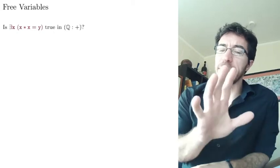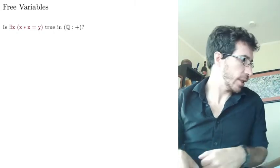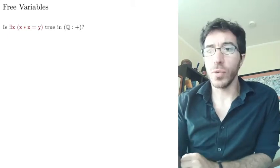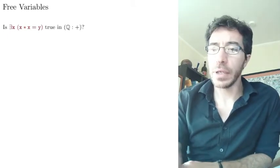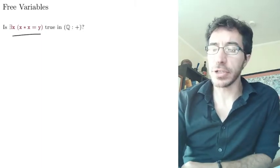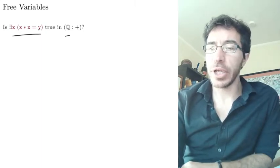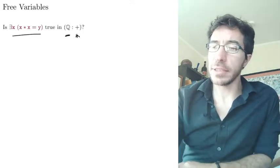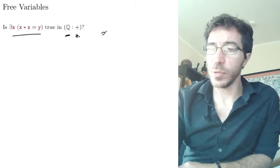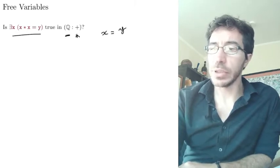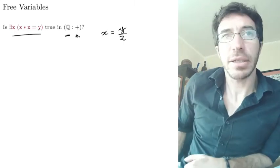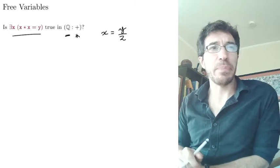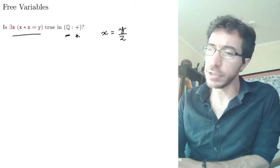Let me start with a question. Consider this sentence: there exists an x such that x★x equals y. I ask you whether that's true on the structure of the rationals where the operation star is interpreted as plus. You'd say yes — just make x equals y over 2 in the rationals, and you'll always have x plus x equals y.